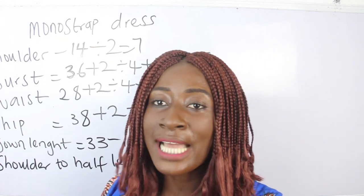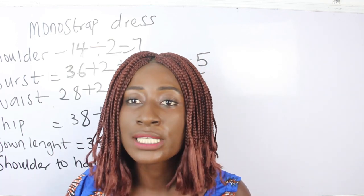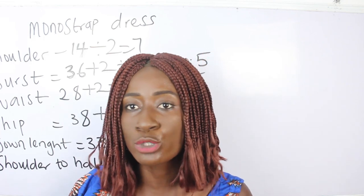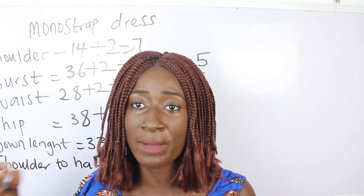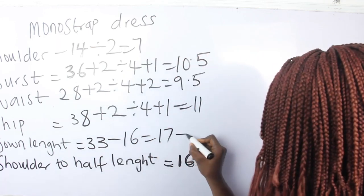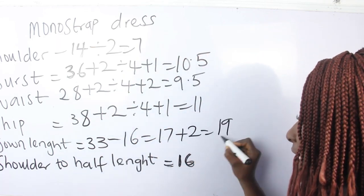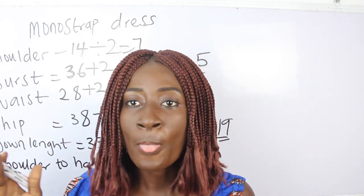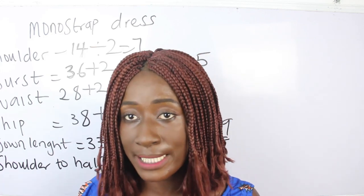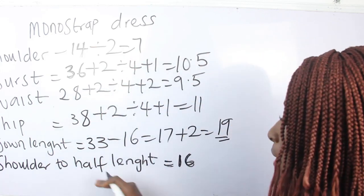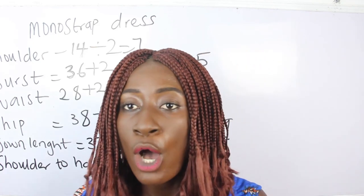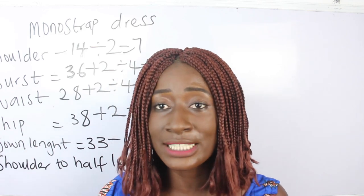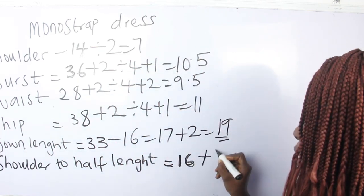Add 2 inches sewing allowance to the 17 inches — half inch to attach to the half length piece, and one and a half inches for hemming allowance — giving us 19 inches for the pleating length. For the upper bodice (shoulder to half length), we have 16 inches; add one inch sewing allowance for attaching the pleating, giving 17 inches.